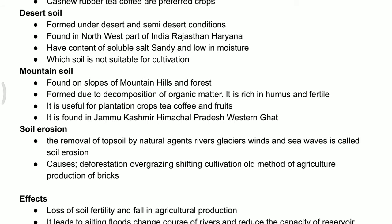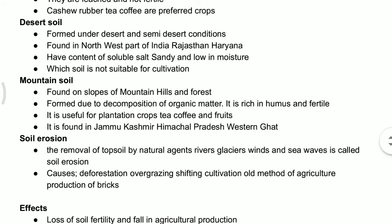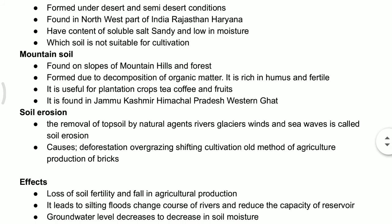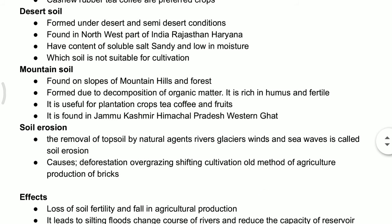Mountain soil has a rich content of humus, so it is very fertile. Humus is organic matter mixed with soil. It is best suited for plantation crops — tea, coffee, and fruits. Jammu and Kashmir is very famous for apples, Himachal Pradesh and the Western Ghats are famous for fruits, coffee, and tea as well.